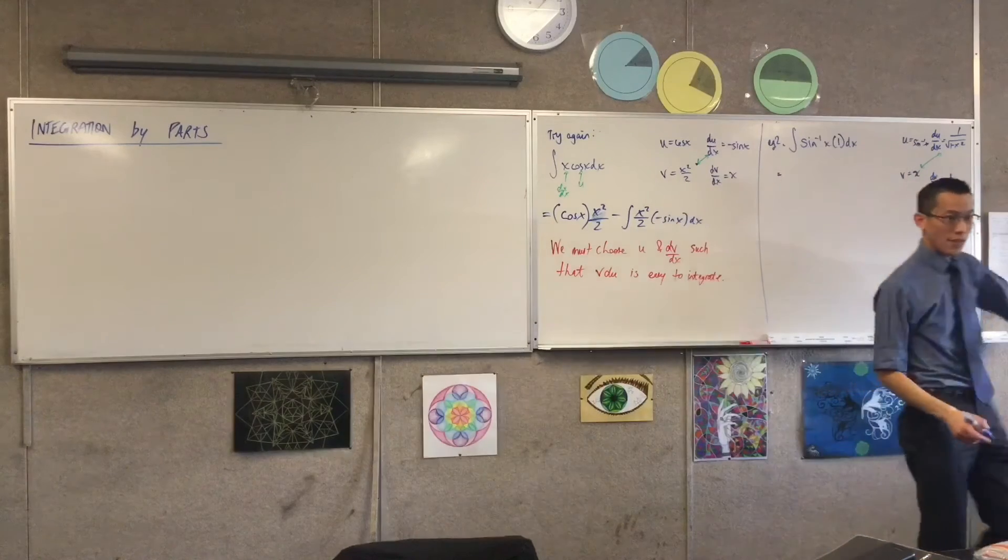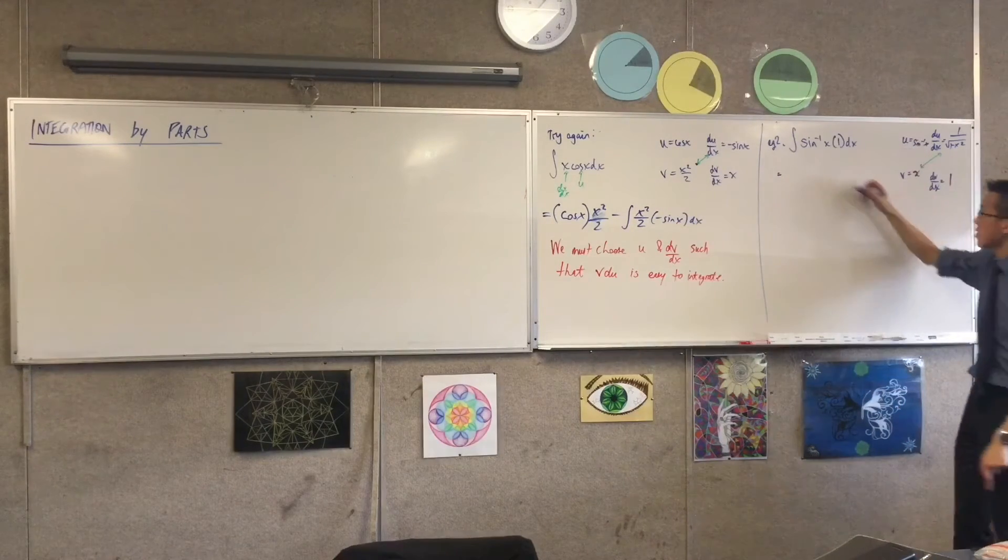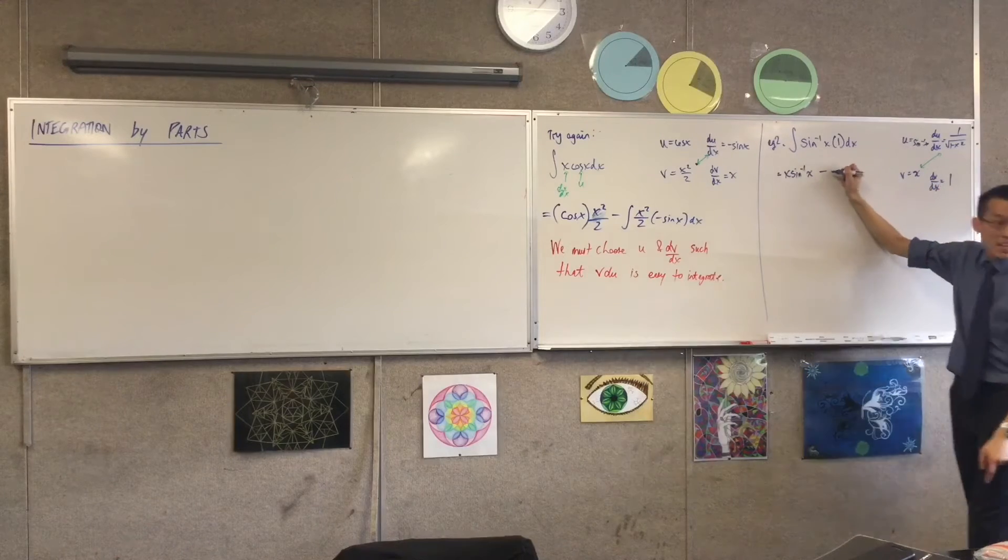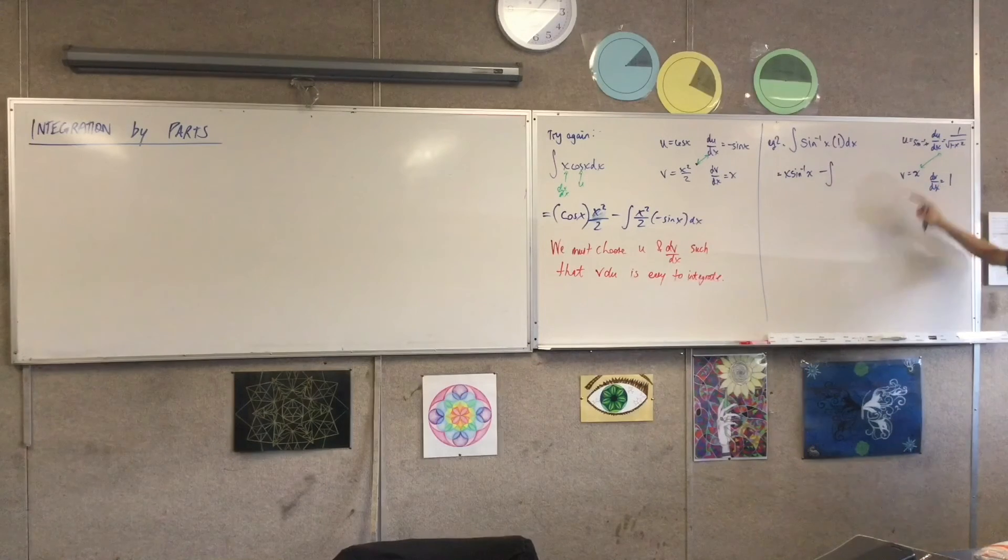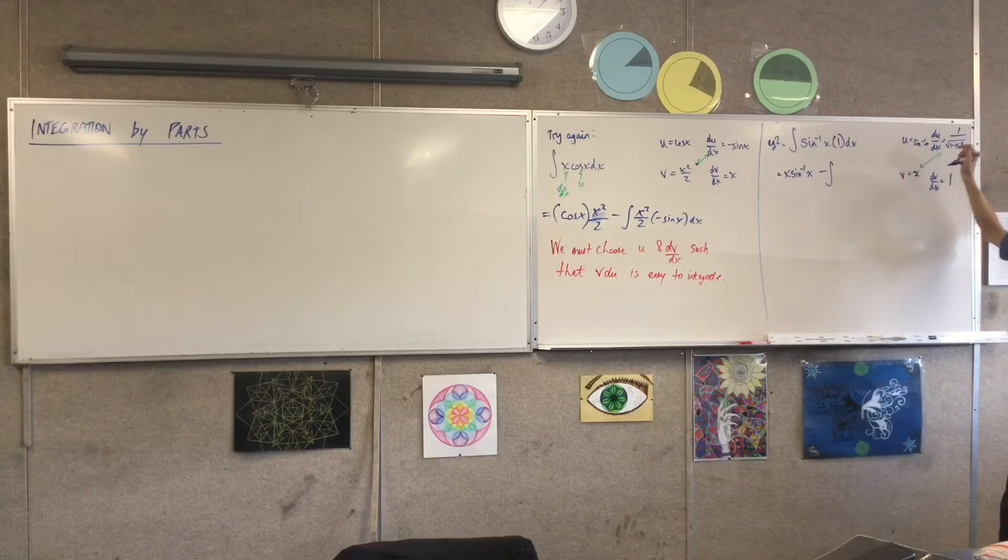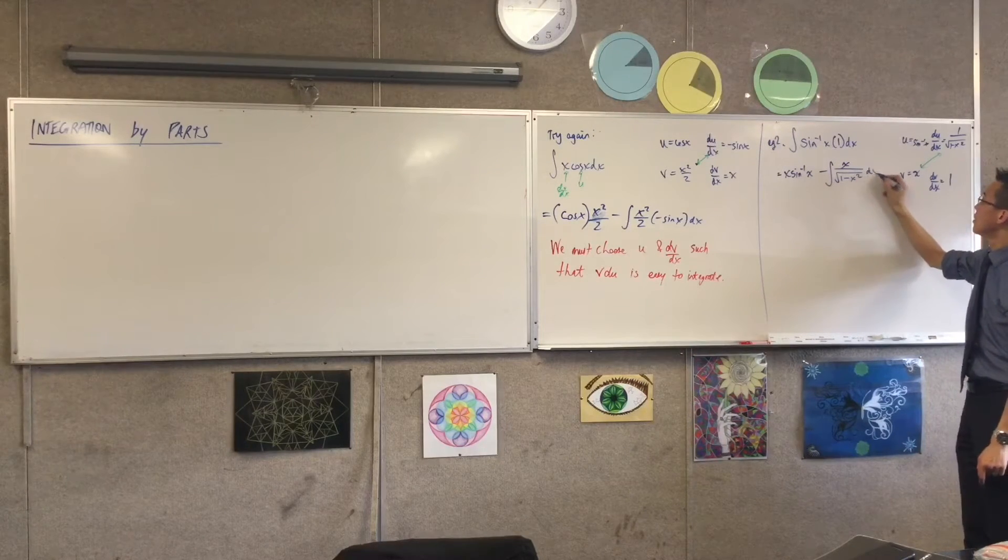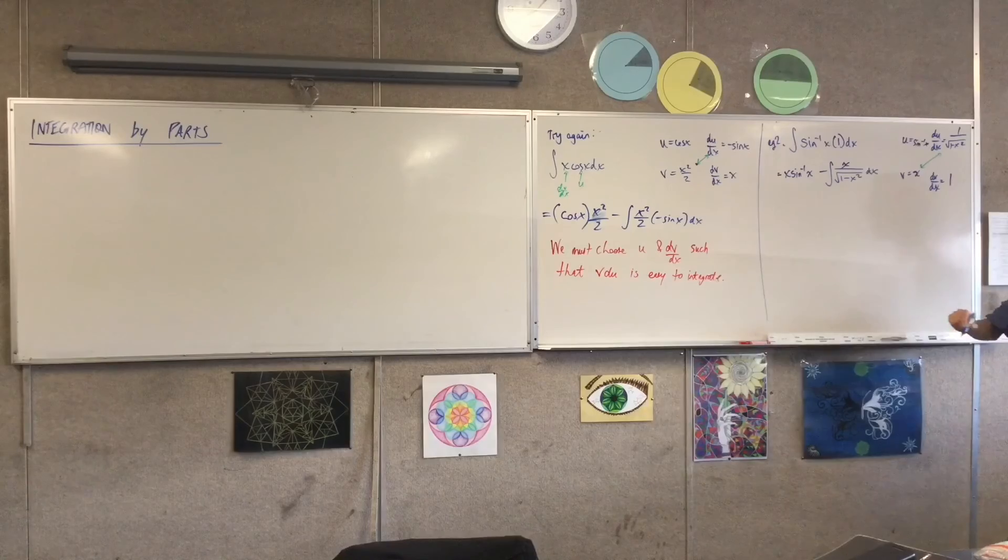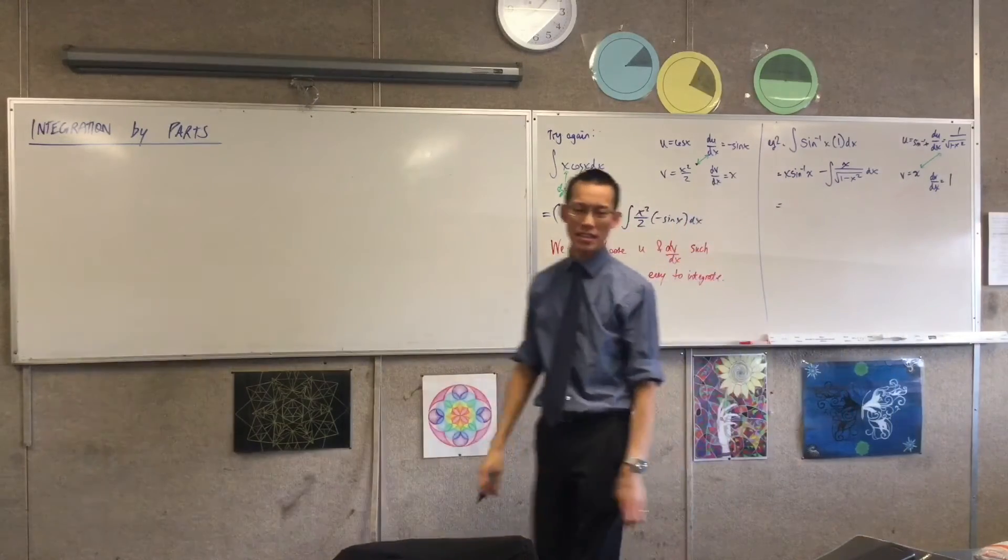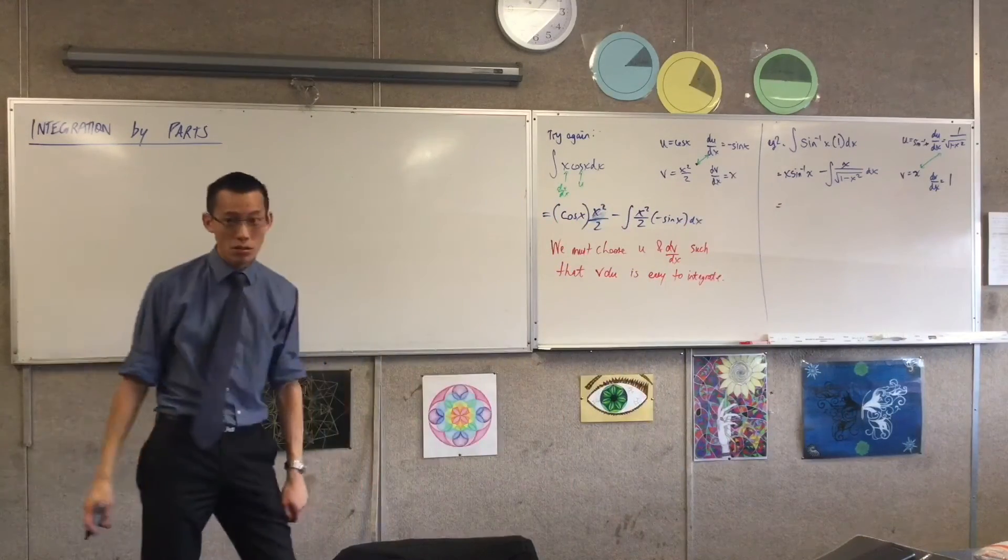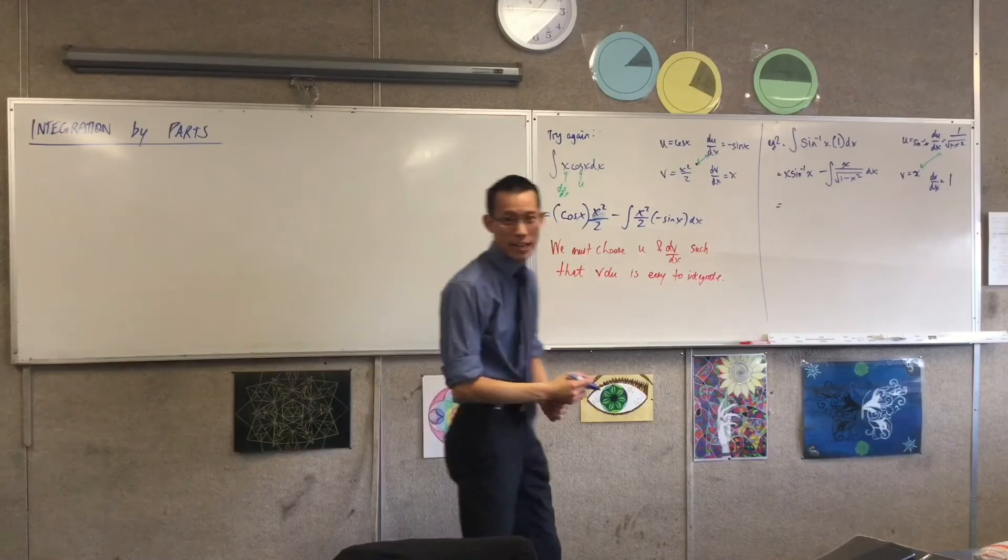The integral of u dv is equal to u v take away the integral of v du. Okay, does that make sense? So I've got x times sine inverse minus the integral of x on the square root of that. Make sense? Is that what your second line looks like? So that's my u v minus integral of v du. What do I do now? What did you guys do with that integral?